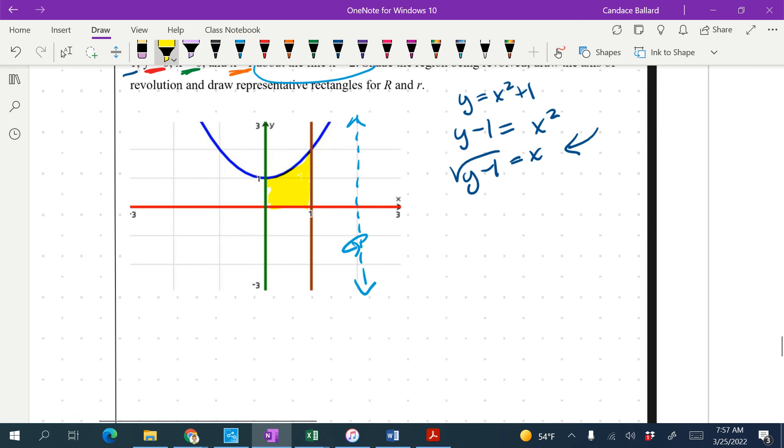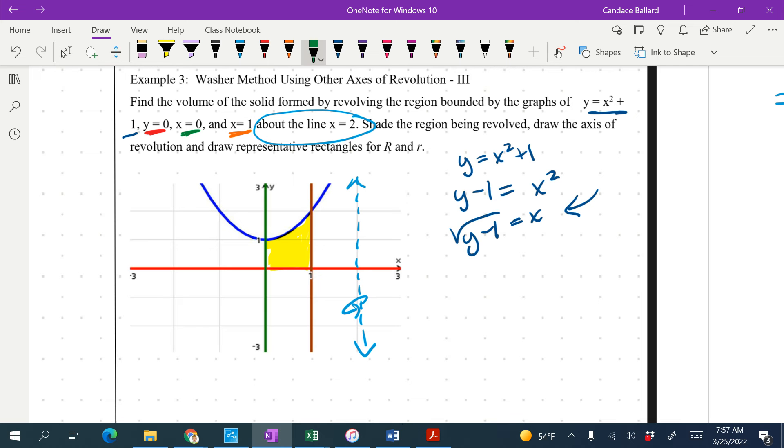So when we're in this situation, we always want to do the outer function minus the inner function. In this case, my outer function, if I'm looking at the bottom part here, is the green one. My inner function is the brown one.